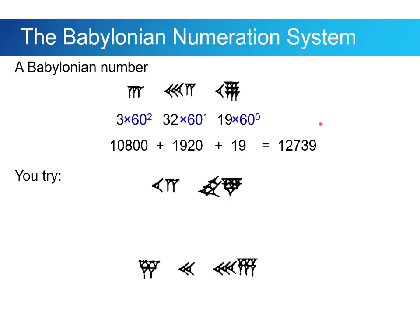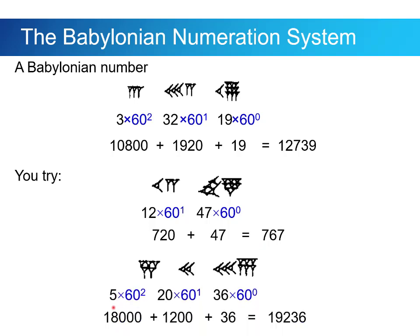We are back. Let's see how you did. So in this first case, it's 12 and 47. So the 12 gets multiplied by 60. The 47 gets multiplied by 1. It just remains 47. And together, we get 767. In the second case, 5, 20, and 36. So multiply by the appropriate place value, 60 squared, 60, and 1. Add them up, and there we go, 19,236. So that's the Babylonian numeration system.